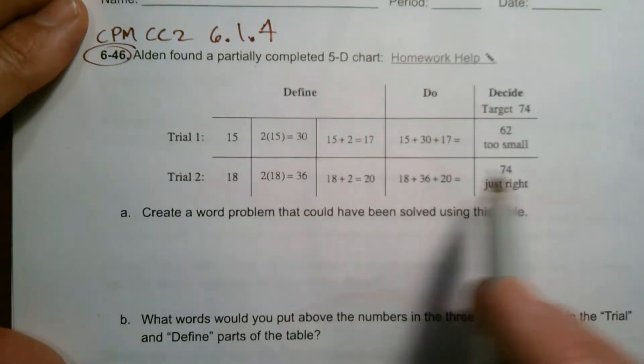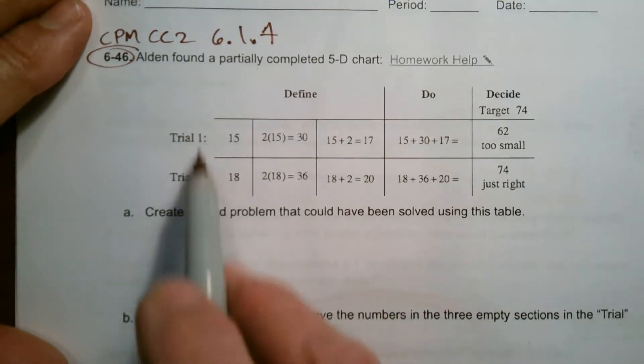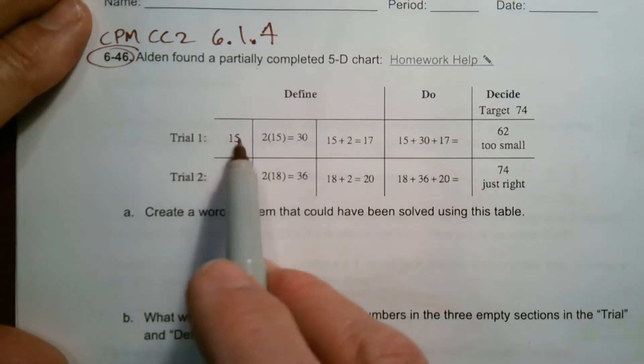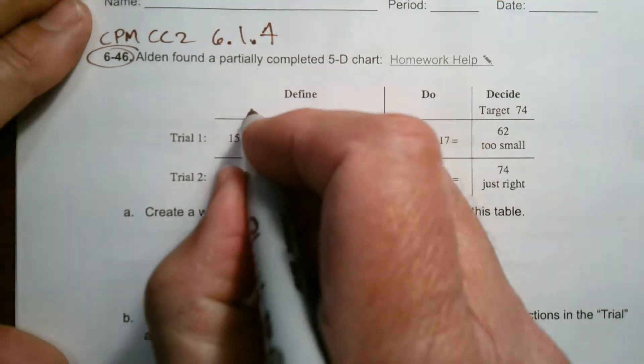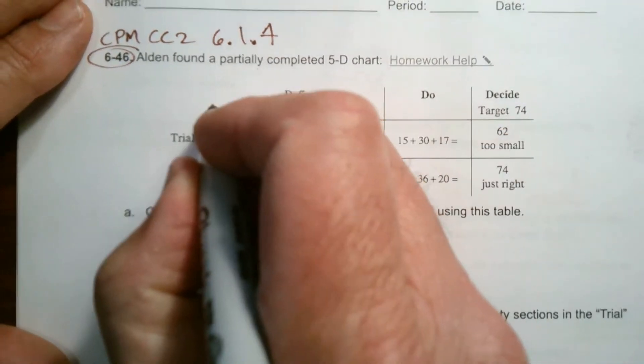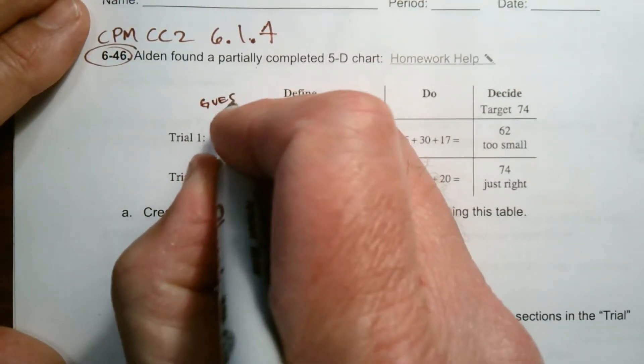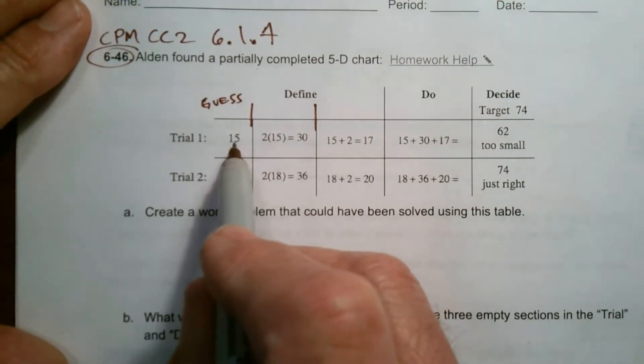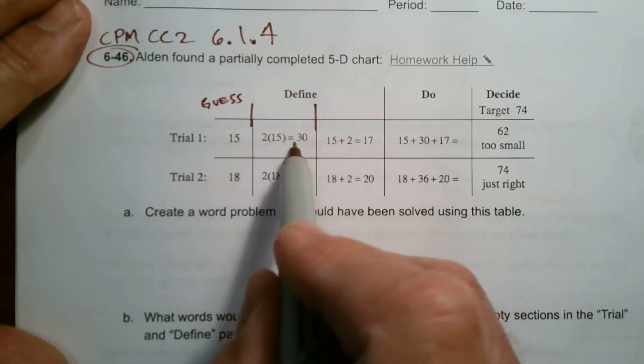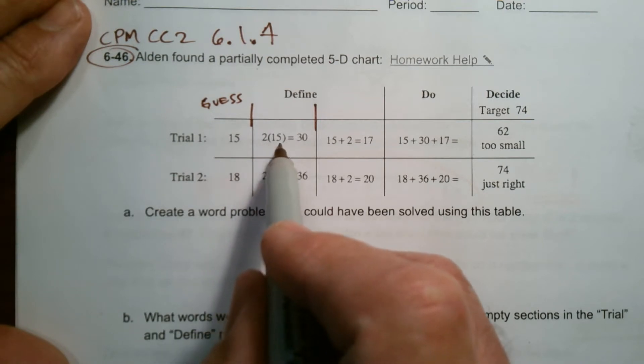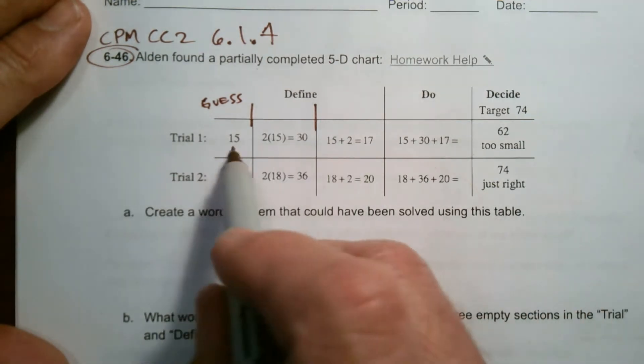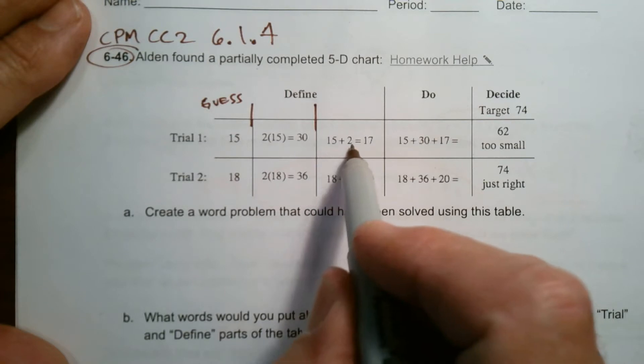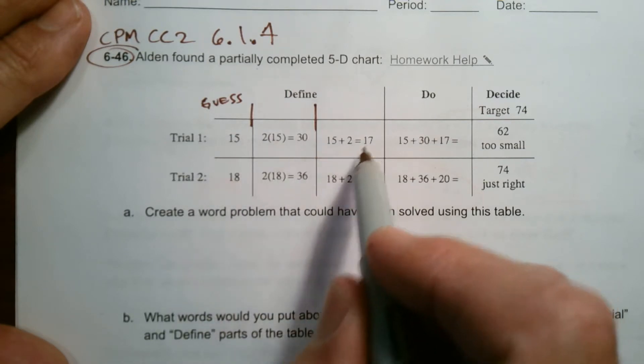So here's what we've got. I can see in my define, I've got a couple trials. It starts with 15. And then the next thing here, this is kind of my guess. When we're doing a guess and check table, that 5D process, this is our start. So if I put in 15, the next thing it looks like you do is multiply that 15 by 2, and then also take that same 15 and add 2. So you got three different pieces here.